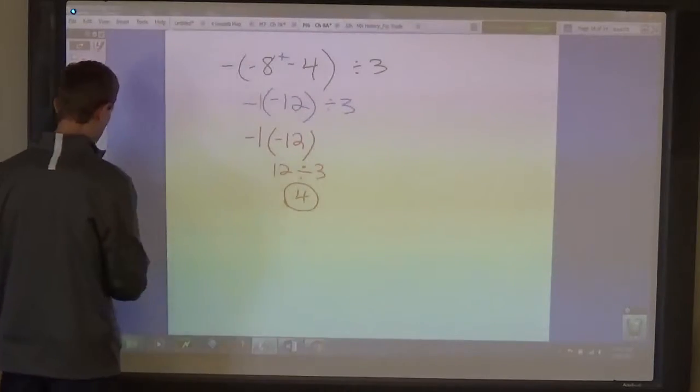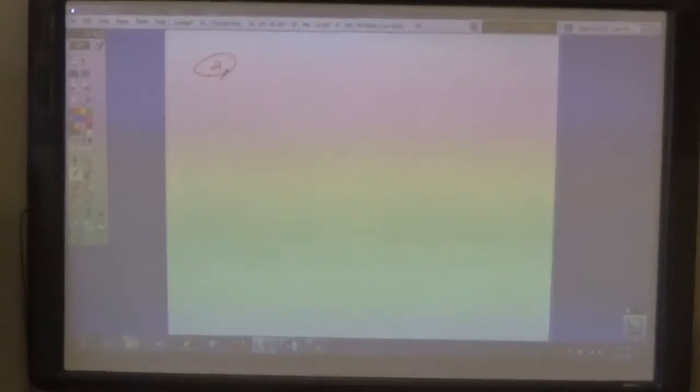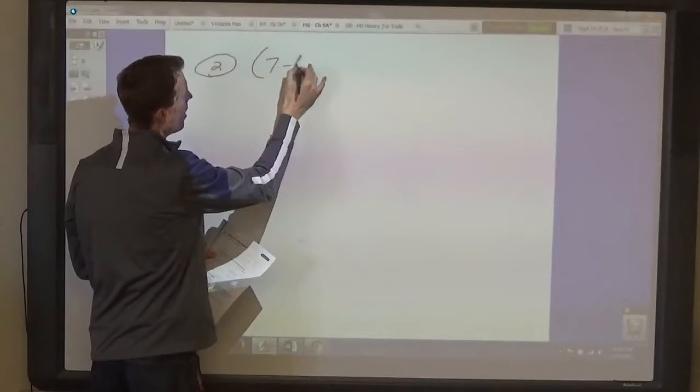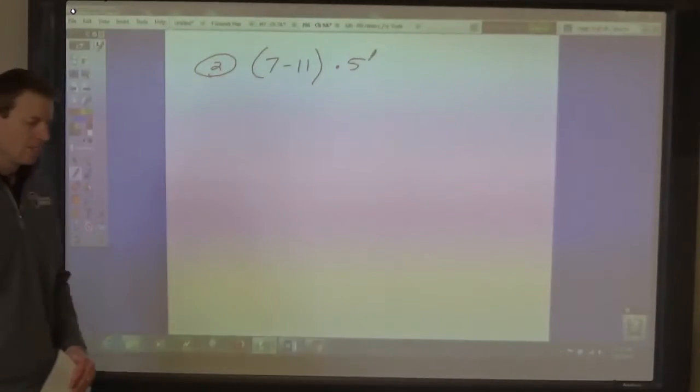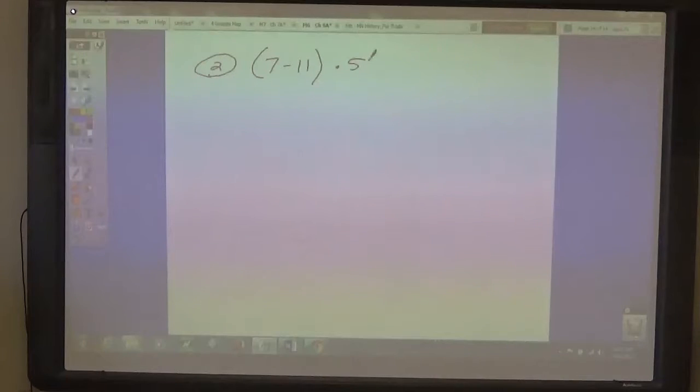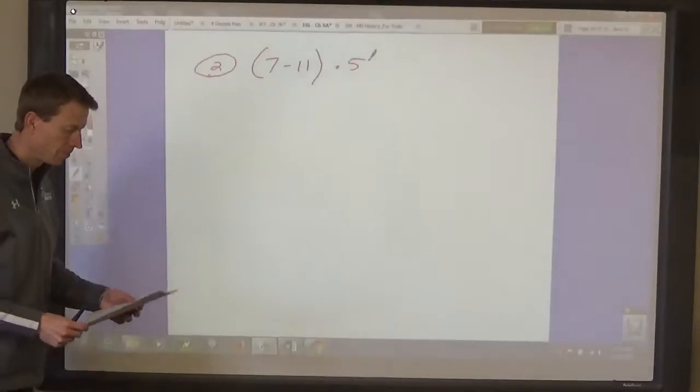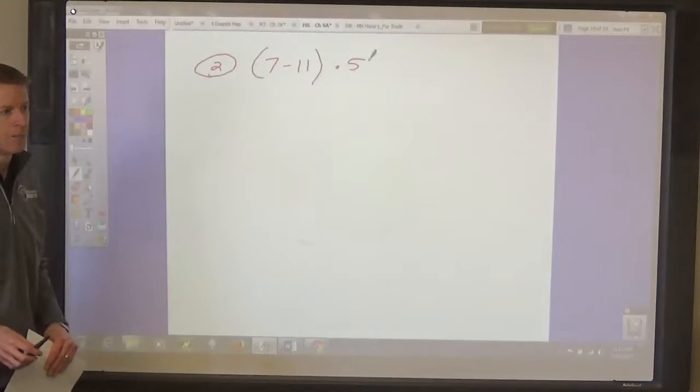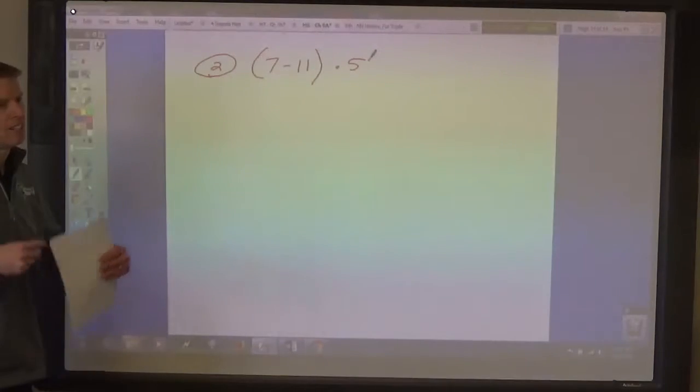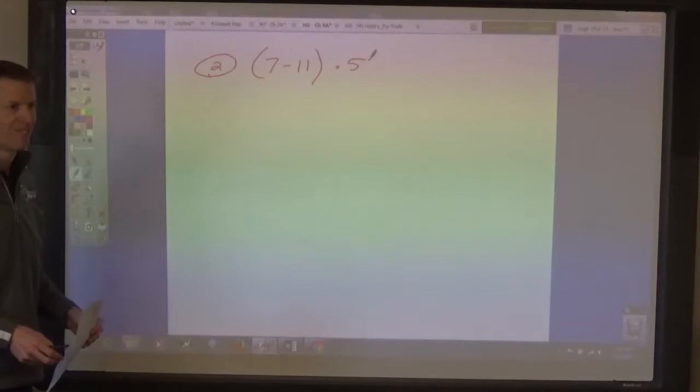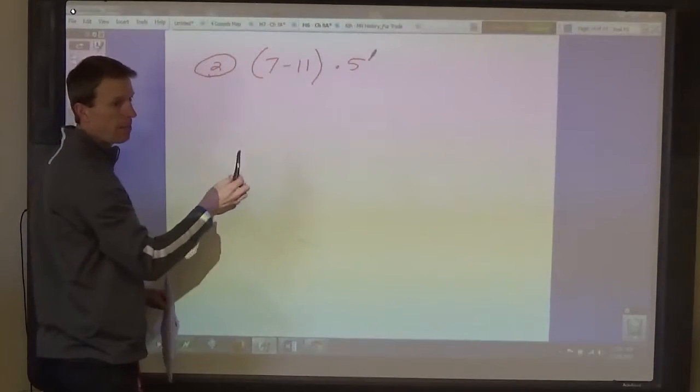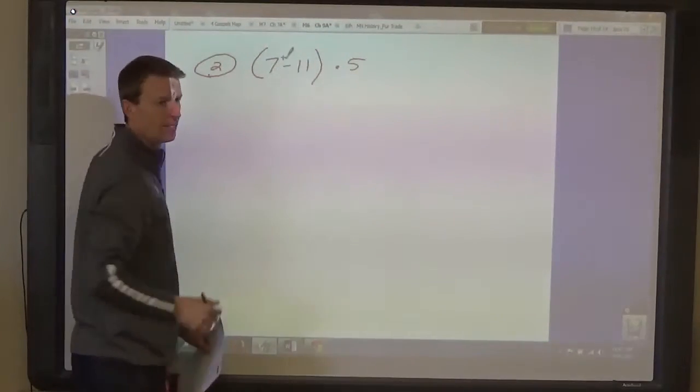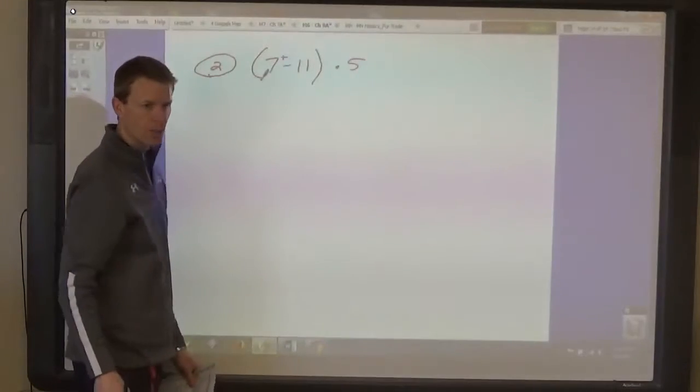Number two. Write down number two in your notebook paper and then write seven minus eleven times five. Please put a dot instead of the x. Don't work ahead because I'm not going to sign you all of them. What would we do first, Maya? Parenthesis first. Okay, so what would we do inside the parenthesis? Seven minus eleven is the same as seven plus negative eleven. Plus negative eleven, good. So write the plus sign in. Add the two. What's the answer?